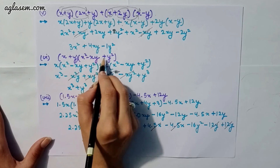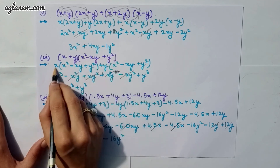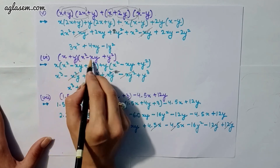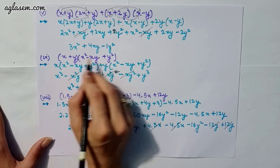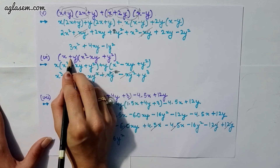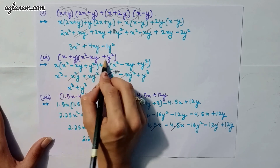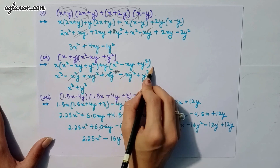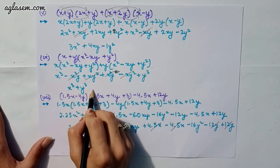Moving to the sixth part: (x + y)(x² − xy + y²). x multiplies (x² − xy + y²) and y multiplies (x² − xy + y²). After solving, all middle terms cancel and you get the answer x³ + y³.